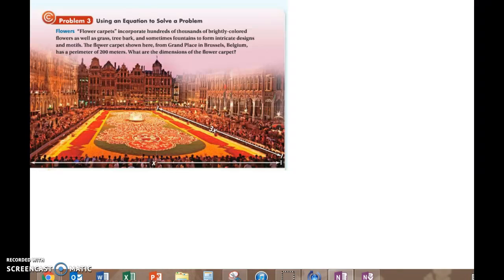This problem is about flowers and flower carpets. It says flower carpets incorporate hundreds of thousands of brightly colored flowers as well as grass, tree bark, and sometimes fountains to form intricate designs and motifs. The flower carpet shown here from Grand Place in Brussels, Belgium has a perimeter of 200 meters. What are the dimensions of the flower carpet? So you may have guessed it, we're going to be using an equation to figure out the dimensions of the flower carpet. And of course we need to use some variables.